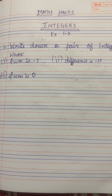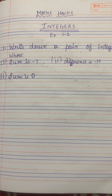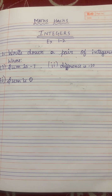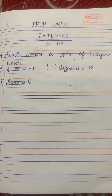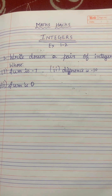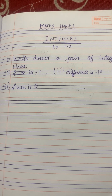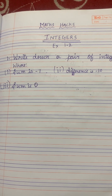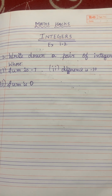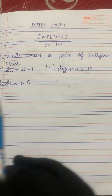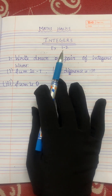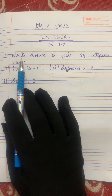Hi viewers, today we will solve the second exercise of the integers chapter. First and foremost, what is integers? Integers is a collection of numbers which contains whole numbers and negative numbers. So, let's solve the first question of exercise 1.2.